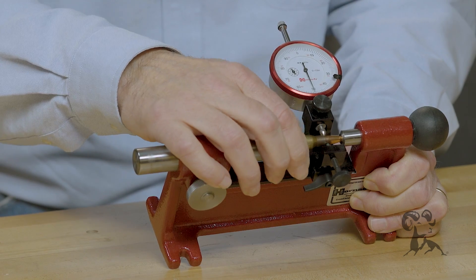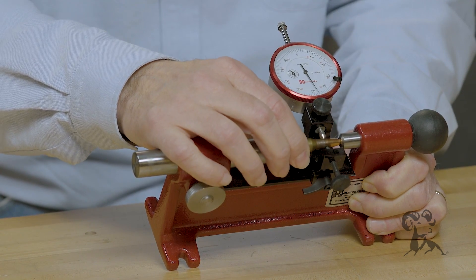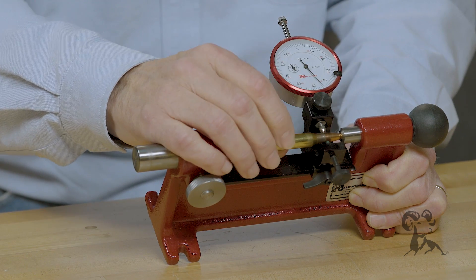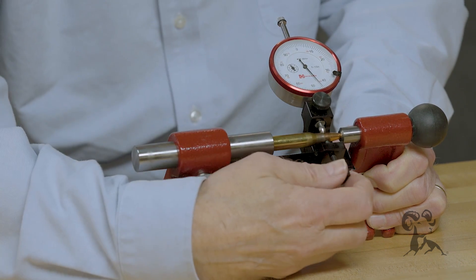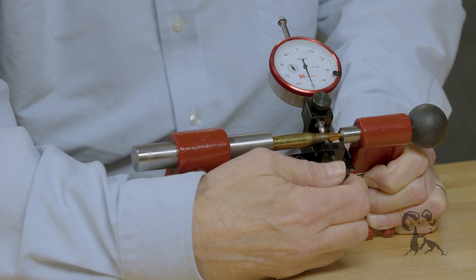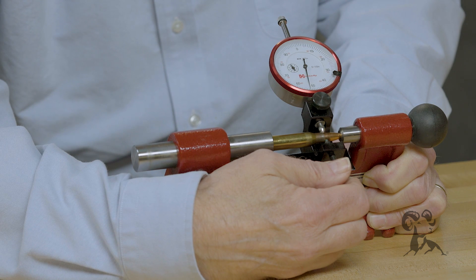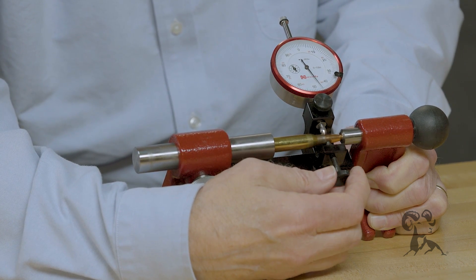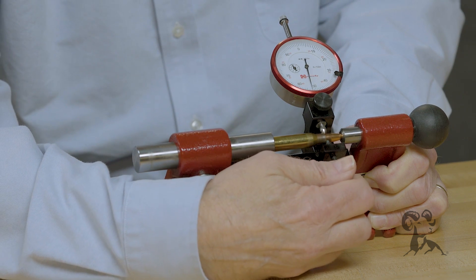So you put it in the low spot and you tighten. Notice how that goes up to where it used to be. You give it a little push past the high spot because there's going to be some spring back. See, we didn't gain much, maybe a half a thousandth. Try it again, a little more.